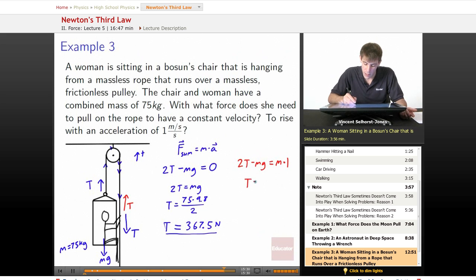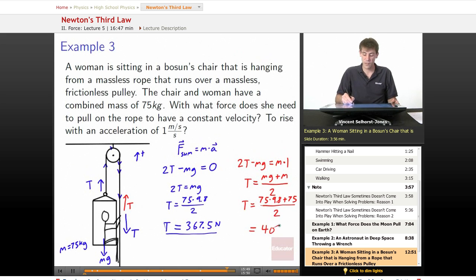So T equals (Mg + M)/2. We plug everything in that we know. T equals (75 times 9.8 plus 75) over 2. Plug that into a calculator and what number do we get? We get 405 Newtons.